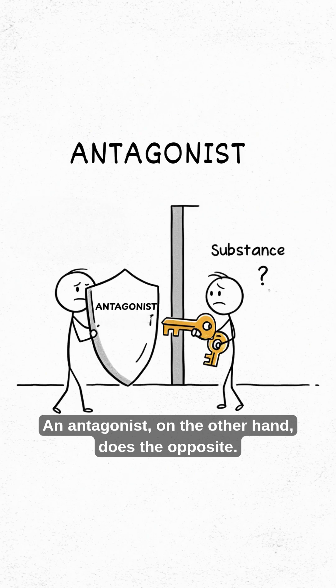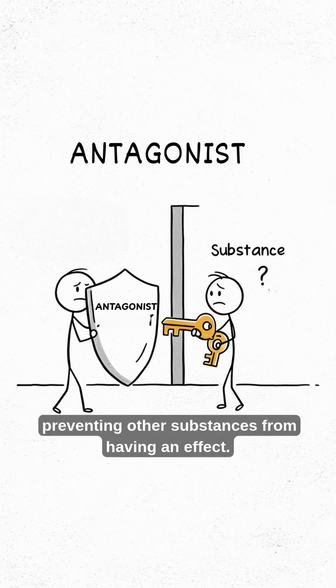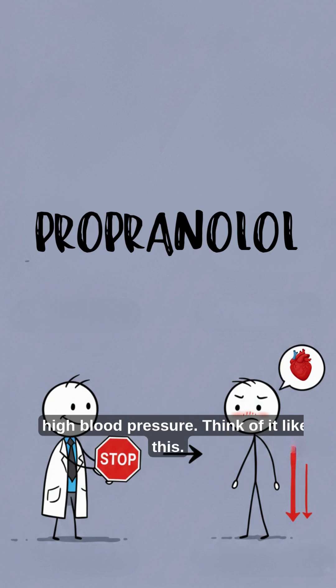An antagonist, on the other hand, does the opposite — it blocks the receptor, preventing other substances from having an effect. For example, propranolol. It's a beta antagonist and helps lower high blood pressure.